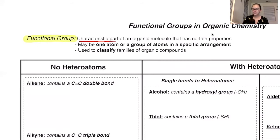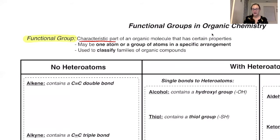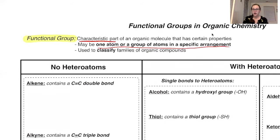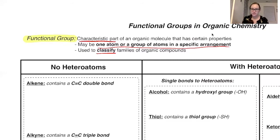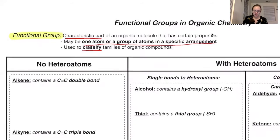This functional group may be one atom, such as in a haloalkane where we have a halogen and an alkane, or a group of atoms in a specific arrangement — for example, a carbon, then an oxygen, then a carbon. Functional groups are also used to classify families of organic compounds; this is how organic chemists classify and define what molecules are.